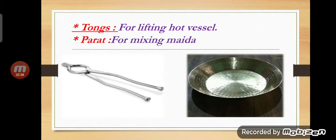The next object is tongs. Tongs are used for lifting hot vessels. If a vessel is hot, we cannot lift it with our hands directly because there will be chances of burning, so we use tongs. Our next object is parat. Parat is used for mixing maida in large quantities.